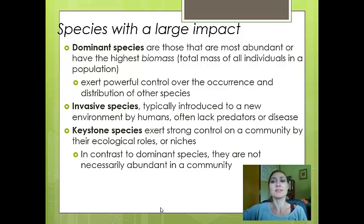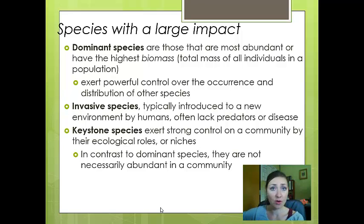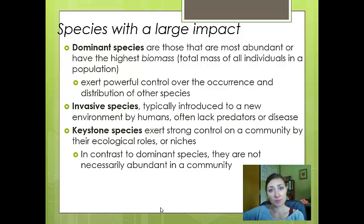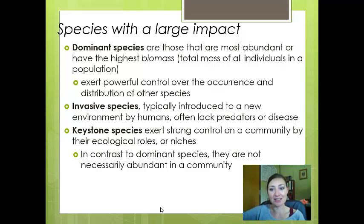Dominant species are those with the most abundance or highest biomass — the total mass of all individuals in a population. They exert powerful control over the occurrence and distribution of other species. Typically the lower you are in the food chain the larger your biomass, so dominant species tend to be plants. Invasive species are introduced to a new area — often by humans — and lack the predators, diseases, and competitive factors from their original community, so they tend to spread, overpopulate, and edge out native species.